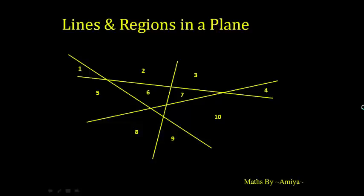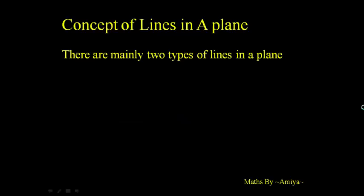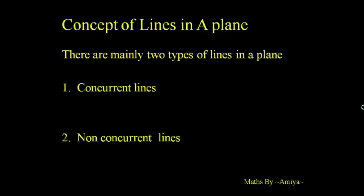Hello friend, today we try to learn lines and regions in a plane. There are mainly two types of lines in a plane: concurrent lines and non-concurrent lines.